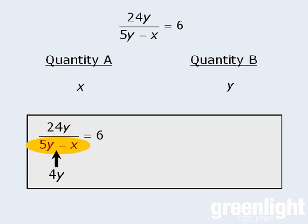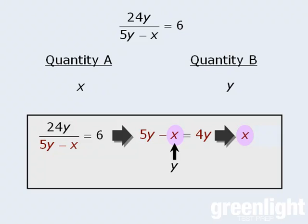In other words, the denominator, 5y minus x, must equal 4y. So we can take the denominator and set it equal to 4y. At this point, notice that we have 5y minus something equals 4y. Well, if 5y minus something equals 4y, then that something must equal y. In other words, x here must equal y.